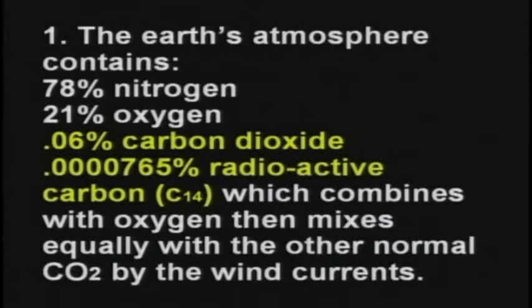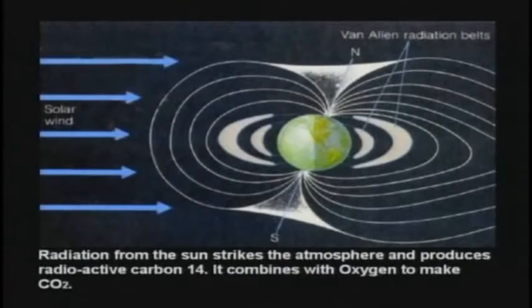Plants breathe in carbon dioxide. And there's a very tiny amount of radioactive carbon-14 — 0.0000765%. This radioactive carbon-14 is different than regular carbon. It's produced by radiation striking the atmosphere. Sunlight strikes the atmosphere, slaps the nitrogen around, and turns it into carbon-14. So it all starts by the sunlight hitting the atmosphere. About 21 pounds of carbon-14 is produced every year, and that is spread out all over the world.